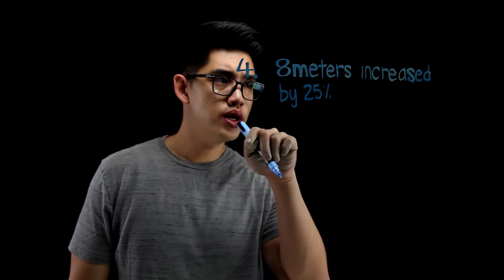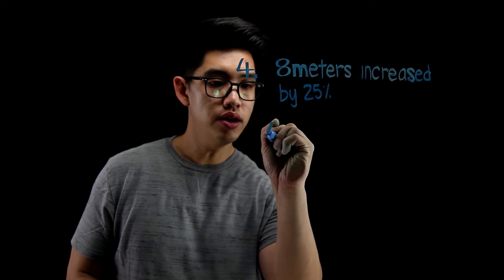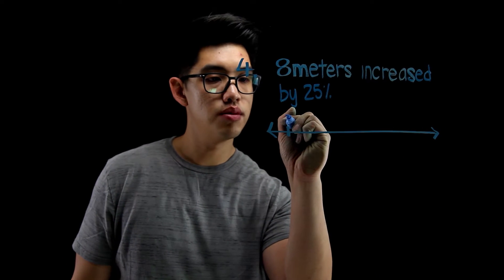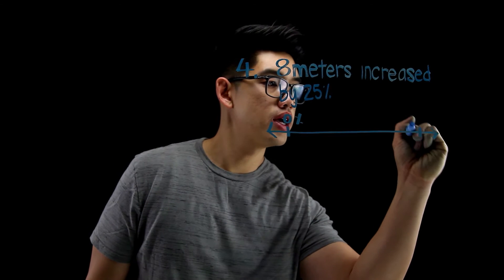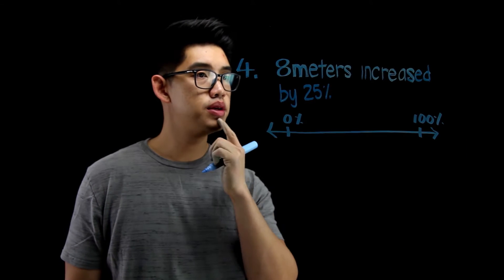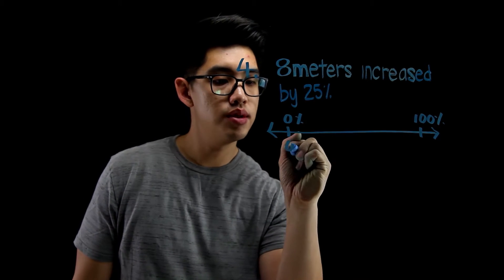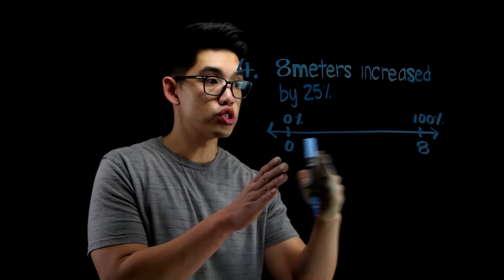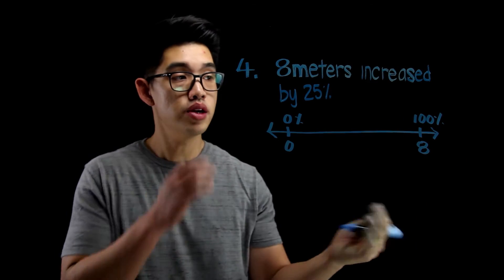What we can do is we can draw a number line. We can say that this right here is going to be 0%. This right here is 100%. I know that this is going to be 0 and this right here is going to be 8 because that's our total length. 100% is 8 meters.